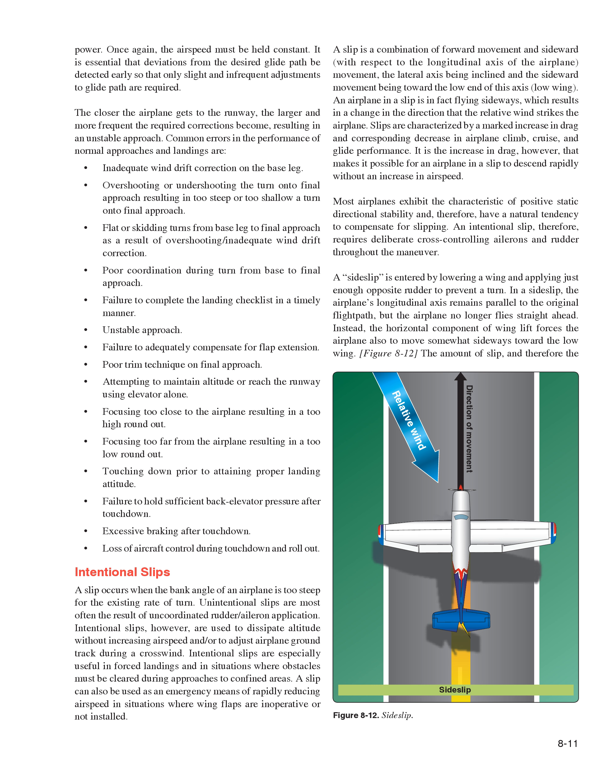Common errors in the performance of normal approaches and landings include: inadequate wind drift correction on the base leg; overshooting or undershooting the turn onto final approach resulting in too steep or too shallow a turn; flat or skidding turns from base leg to final approach as a result of overshooting or inadequate wind drift correction; poor coordination during the turn from base to final; failure to complete the landing checklist in a timely manner; unstable approach; failure to adequately compensate for flap extension; poor trim technique on final approach; attempting to maintain altitude or reach the runway using elevator alone; focusing too close resulting in a too-high roundout; focusing too far resulting in a too-low roundout; touching down prior to attaining proper landing attitude; failure to hold sufficient back elevator pressure after touchdown; excessive braking after touchdown; and loss of aircraft control during touchdown and rollout.